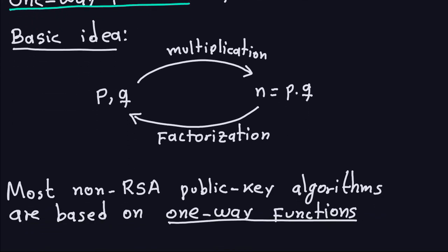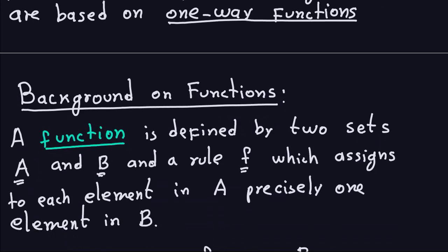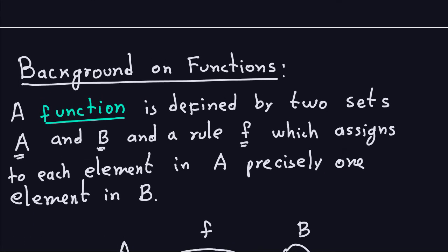Most known public-key algorithms are based on one-way functions — not exactly the same one as in RSA, but some other one-way functions. So it's important we discuss this concept in cryptography. To talk about one-way functions, we first need to talk about what functions are. If you took discrete mathematics or any math class, you probably know what a function is, but let's recall it for clarity.